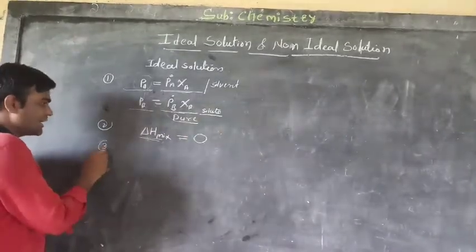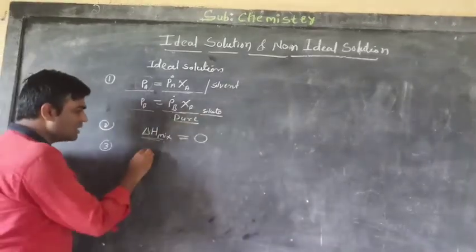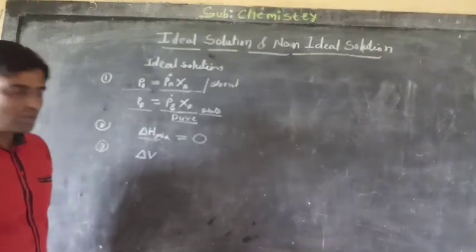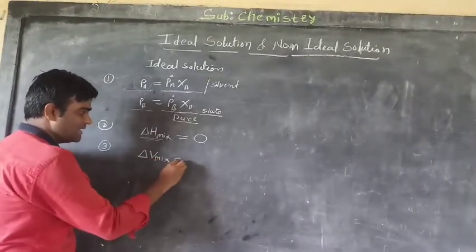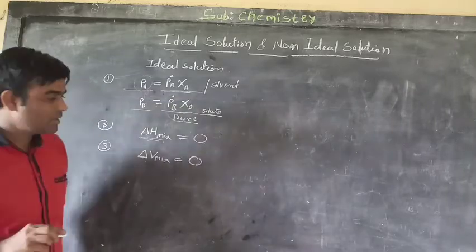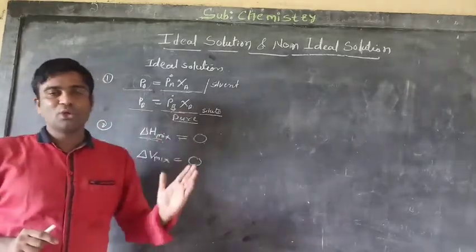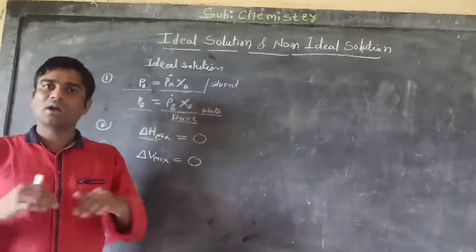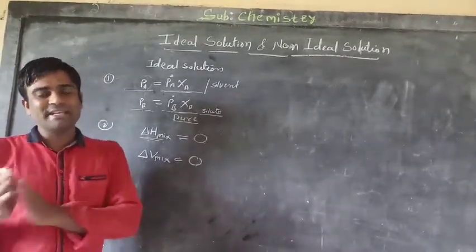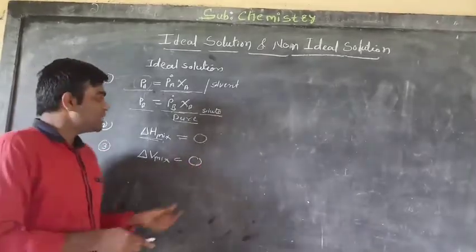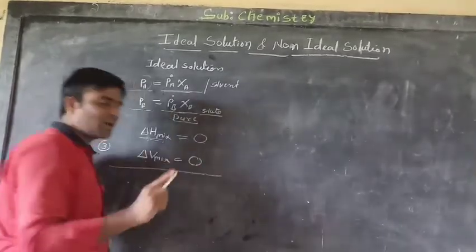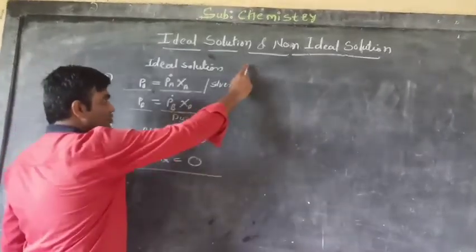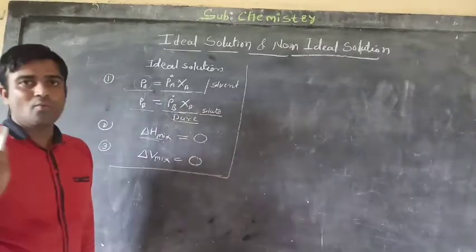The third condition is delta V mixing — the change in volume upon mixing — is equal to zero. This means when we mix solvent and solute, the volume does not increase or decrease; it remains the same. So these three conditions, when followed, define an ideal solution.